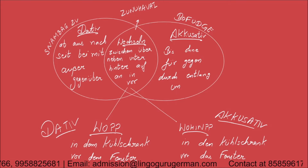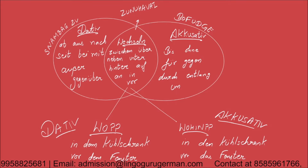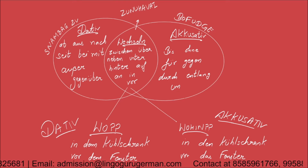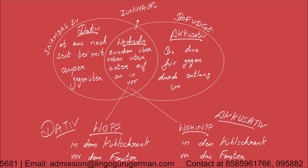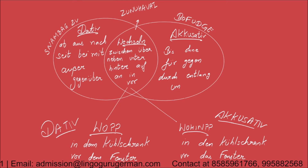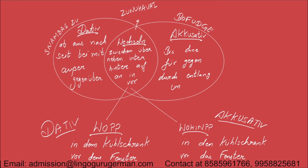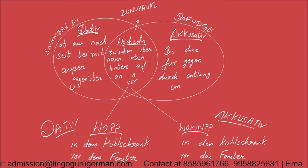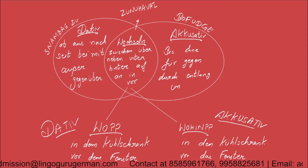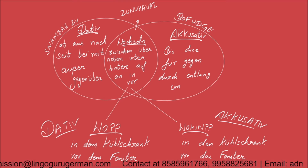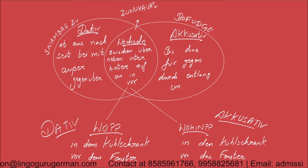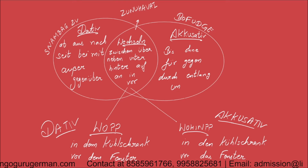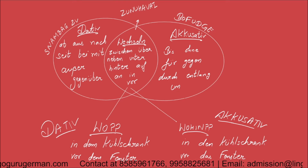We have a small chart on the right side where dative prepositions are listed: aus, nach, seit, bei, mit, außer, gegen, über, von, zu. These are the dative prepositions, which we can learn using the acronym SNAMBAC. SNAMBAC is an acronym to help remember all the dative prepositions.